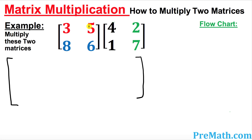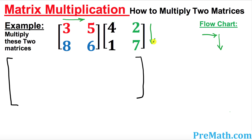We must follow a flowchart. The flowchart for the left-hand side matrix is going to be always from left to right. And for the right-hand side matrix, the flowchart goes from top to bottom. So once again: from left to right and then top to bottom. Just keep that in mind and it's going to save you lots of hassle.